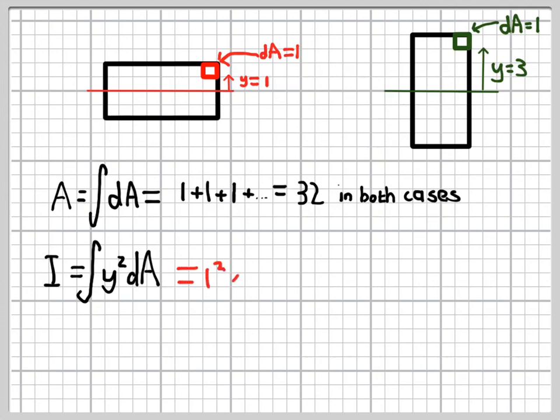If we evaluate that, then in the first case, what we get for the little piece of area is 1 squared, because the y is 1 in this case, multiplied by 1. And then, of course, we'd have to add up all the similar terms for each other piece of area.